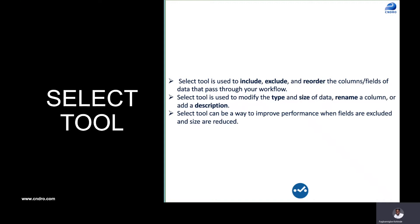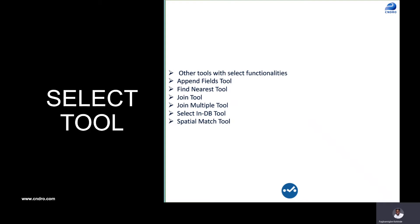Let's dive into the select tool and see how it is being used. Before that, I should mention there are some tools that also have select tool functionalities — the ability to include, exclude, reorder, modify data types and size, rename columns, and add descriptions. These include the append field tool, find nearest tool, join tool, join multiple tool, select in DB tool, and the spatial match tool.